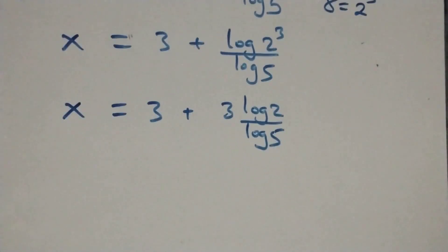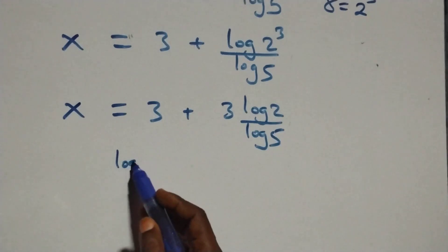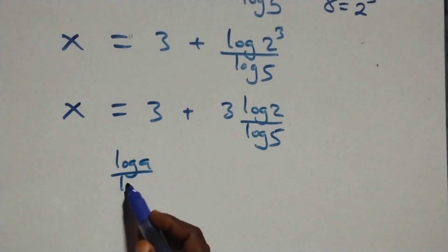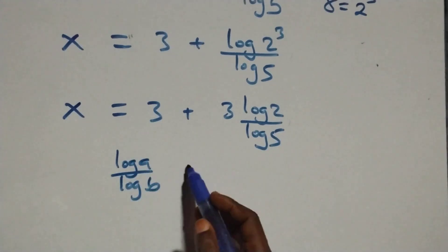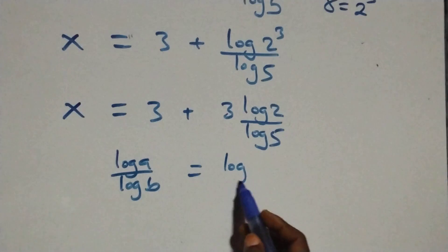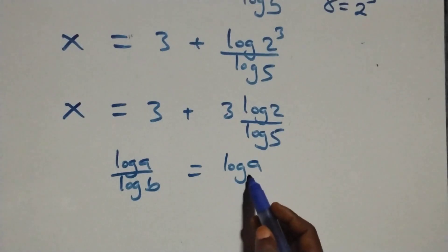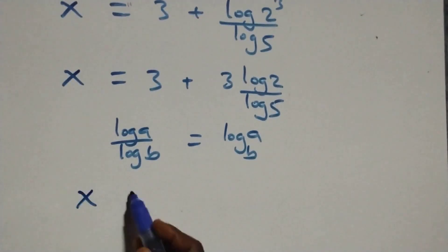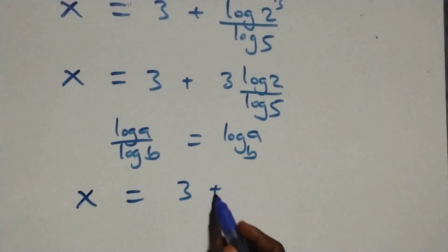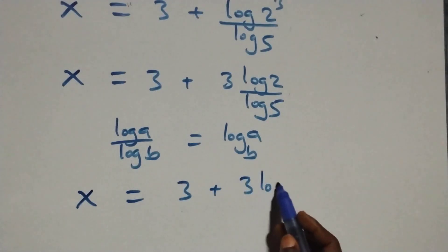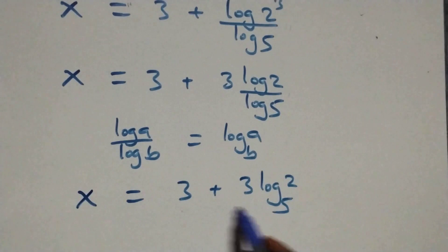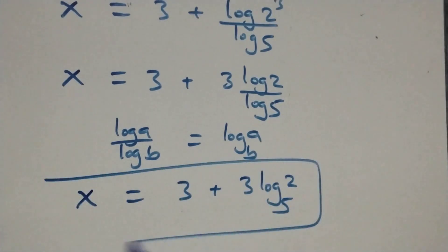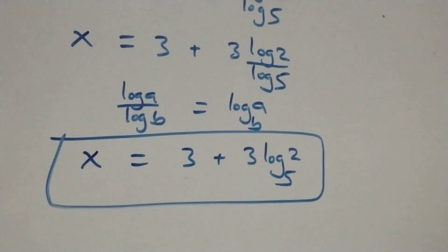Applying the change of base formula — when we have log a over log b, it is the same as log a to base b — this becomes x equals three plus three log two base five. So the value of x is three plus three log two base five.